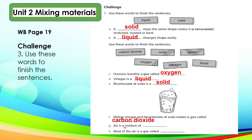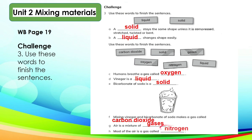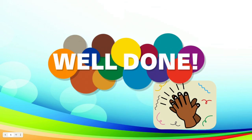Letter G: air is a mixture of gases. Letter H: most of the air is a gas called nitrogen. Nitrogen is a gas that makes up much of the air in the Earth's atmosphere. I hope all questions were easy, and if you can answer this, you are ready to move on to the next unit. Thank you very much for our work well done.